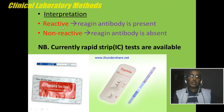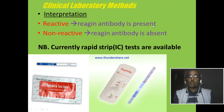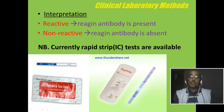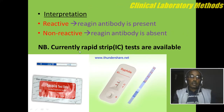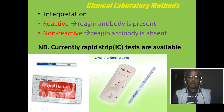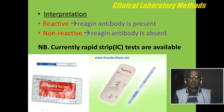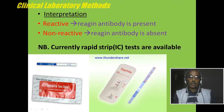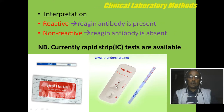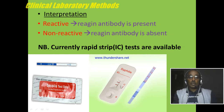Interpretation: Reactive means reagin antibody is present but we are not sure about syphilis. Non-reactive means reagin antibody is absent. Currently, rapid strip tests are also available. The antigen is coated on the strip and if antibodies are present in the sample, they will react with the antibody and make lines. If there are two lines, we report as reactive. If there is only one line at the control side, we report as non-reactive or negative.